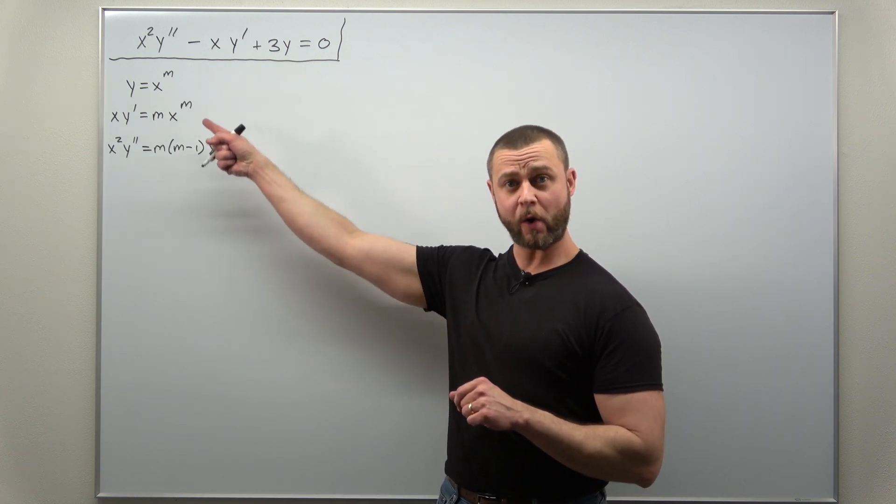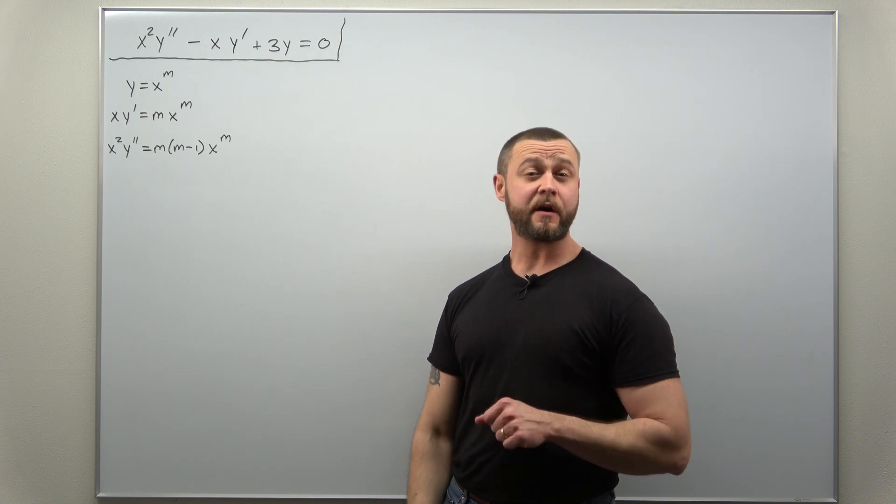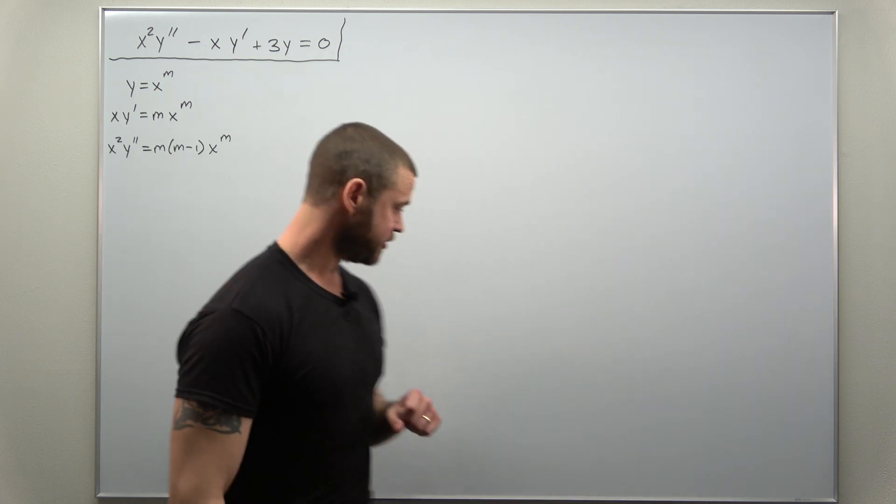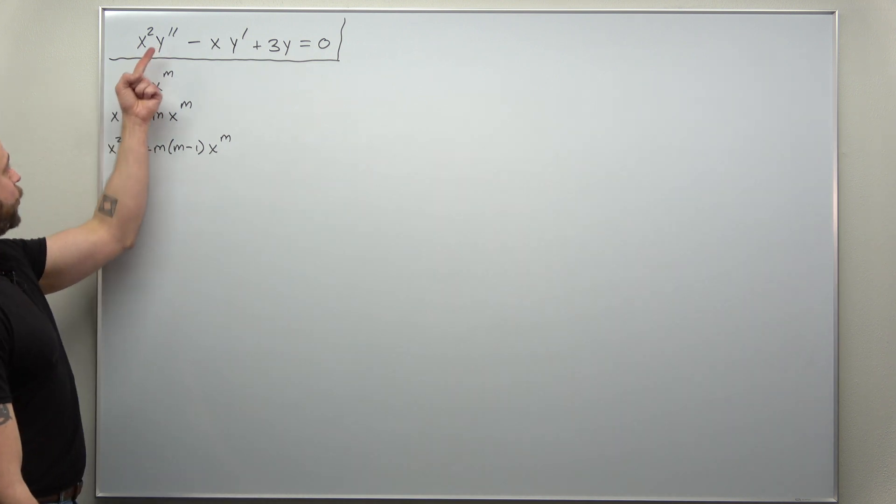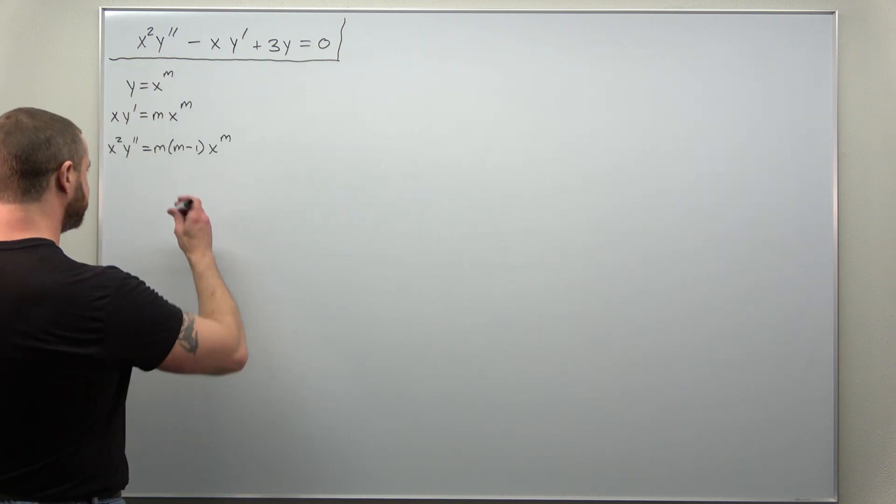Take your three quantities here, plug it in, and you can very quickly get the auxiliary equation. So if we do that, your x squared y double prime term will give you m times m minus 1.